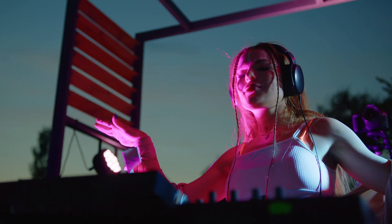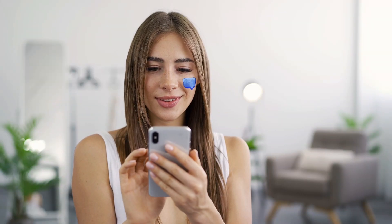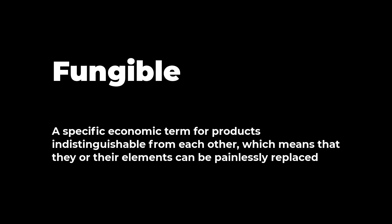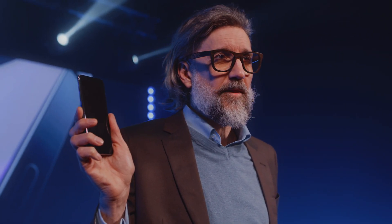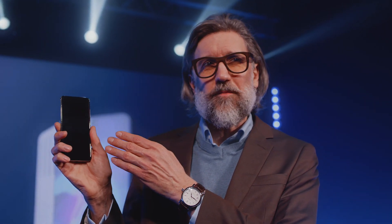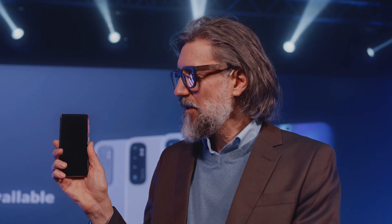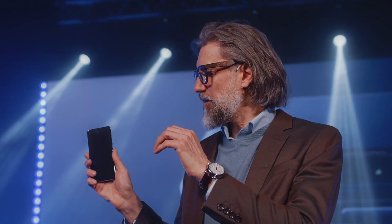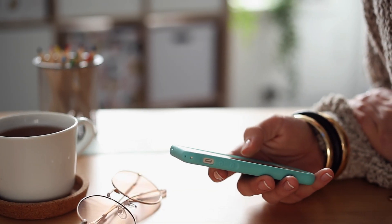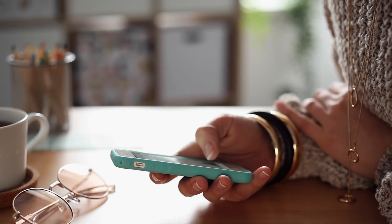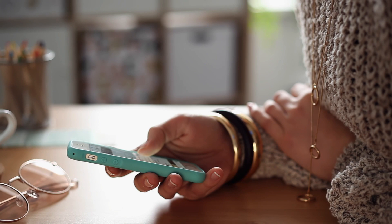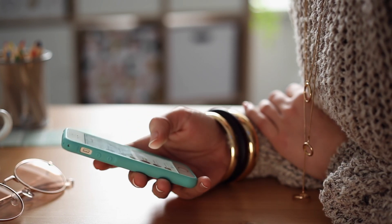To understand how it works, it helps to spell out the NFT abbreviation. The word 'fungible' is a specific economic term for products indistinguishable from each other, meaning they or their elements can be painlessly replaced. For example, when you buy a smartphone, you can choose a brand, color, and model, but you don't care which particular box is taken from the warehouse. A brand new mobile phone is absolutely fungible. However, after a month of active use, the same gadget changes its status — your memories, photos, videos, chats, bank details, and correspondence are stored on it. It becomes unique, only yours, and no one else's. It becomes non-fungible.